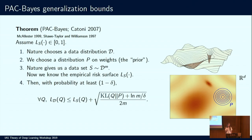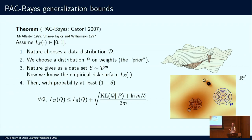The PAC-Bayes bound gives us a guarantee on the risk of the randomized classifier Q. For any randomized classifier Q, the risk of Q is upper bounded in terms of its empirical risk plus a term that depends on the KL divergence. In our toy example, we could center a posterior classifier Q near the wide, large minimum. The variance of Q can be pretty large and we still have a small empirical risk term. The KL divergence between Q and P then determines the tightness of the bound. Alternatively, centering Q' in the narrow minimum requires Q' to be highly concentrated, and PAC-Bayes tells us the guarantee for Q' is much looser because KL(Q' || P) will be much larger than KL(Q || P).